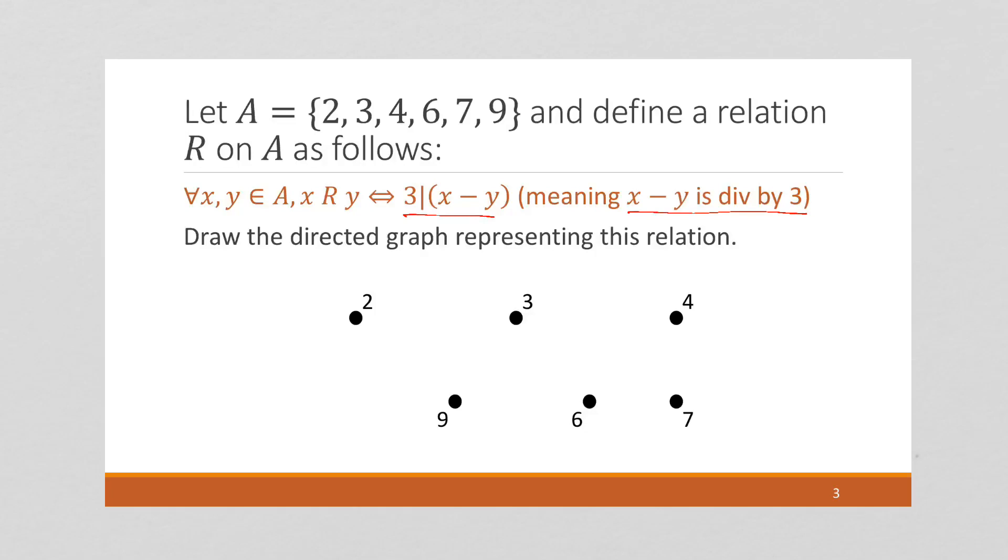Here, two minus two is zero. Remember, everything, zero is divisible by everything. So, each of these is going to have a self-loop. And then, two minus three is going to be negative one, not divisible by three.